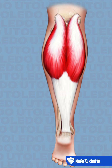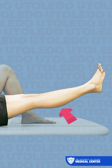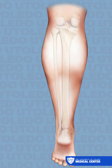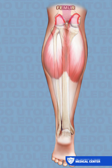The gastrocnemius is the large prominent muscle at the back of the lower leg, giving the calf its distinct shape. The gastrocnemius muscle arises from the femur, and it crosses the knee joint and the ankle joint.